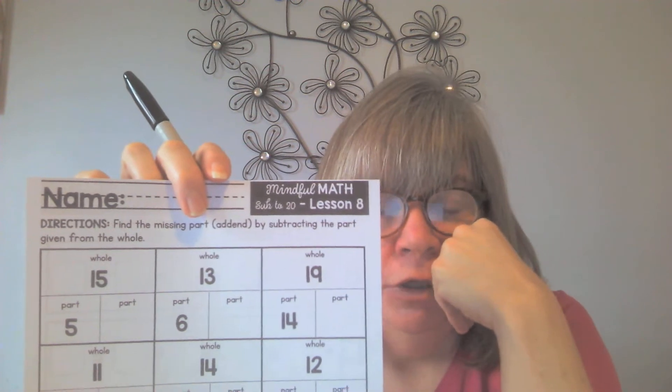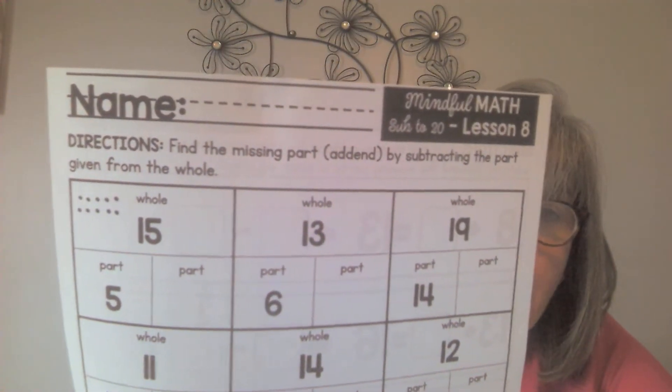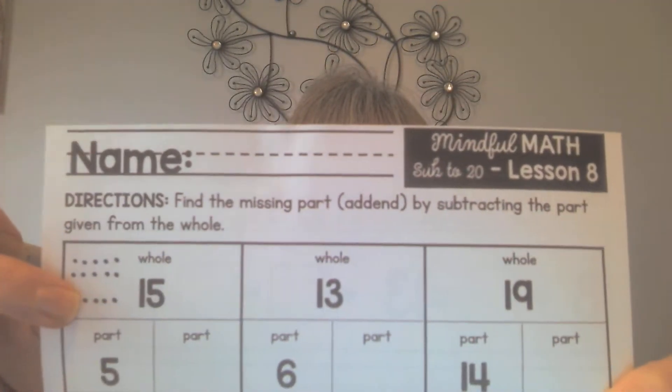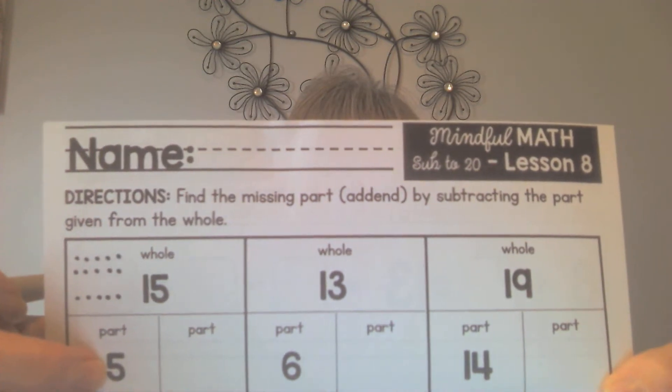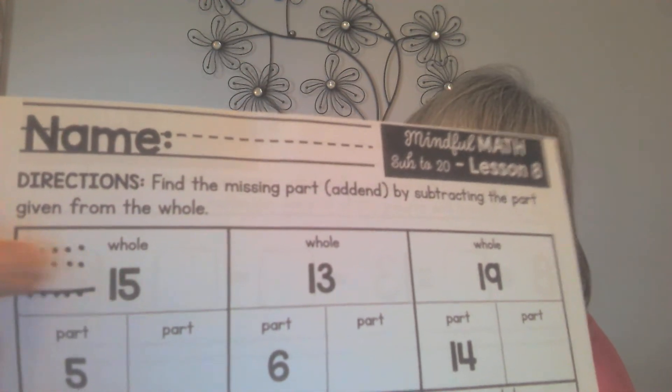If you'd rather use pictures, draw 15 dots and cross off 5 — that gives you the missing part. I'll organize them like a 10-frame so they're easy to count. There are 10 dots, then another row for 5 more makes 15. Now I cross off the part they've given me — that row of 5 — and I'm left with 10.